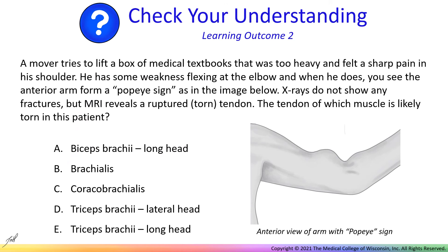Before we wrap up, let's pause to check your understanding. A mover tries to lift a box of medical textbooks that was too heavy and felt a sharp pain in his shoulder. He has some weakness flexing at the elbow, and when he does, you see the anterior arm form a Popeye sign, as in the image below. X-rays do not show any fractures, but MRI reveals a ruptured or torn tendon. The tendon of which muscle is likely torn in this patient? The correct answer is A, biceps brachii long head, which has a long tendon that passes superior to the shoulder joint to the supraglenoid tubercle, a bump superior to the glenoid fossa. Due to its long course, this tendon is prone to injury. Luckily, action of the short head of the biceps can often compensate for this injury to allow flexion at the elbow.